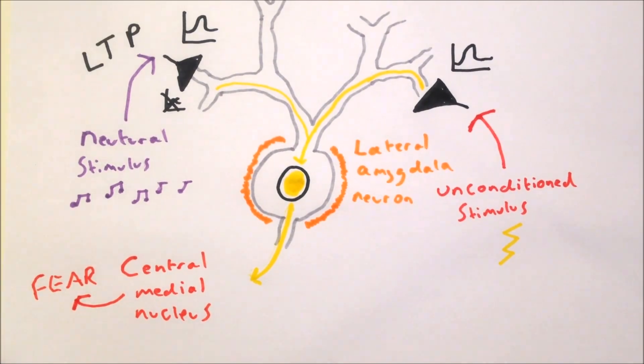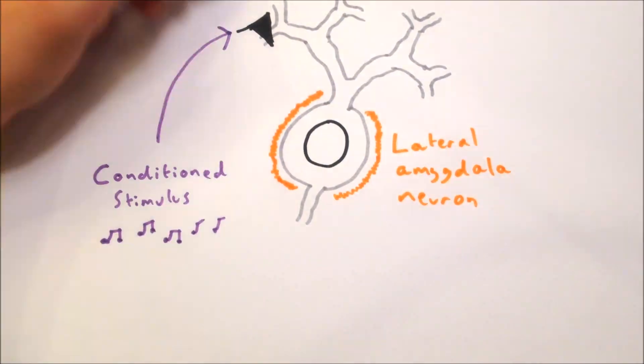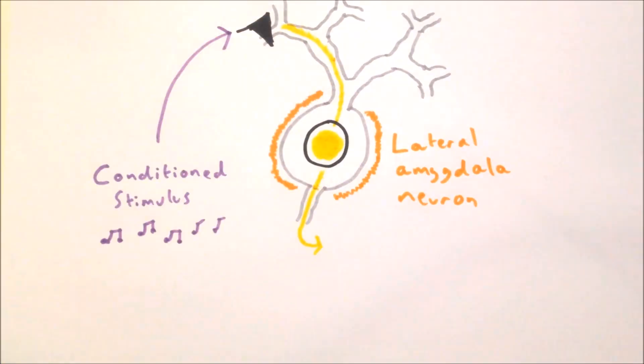This strengthens the synapse between the incoming neurons carrying information about the neutral stimulus of the sound and the lateral amygdala neurons, until eventually the synapse is strong enough to allow them to stimulate the lateral amygdala neurons on their own without the help of the neurons encoding the unconditioned stimulus of the shock.